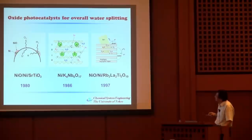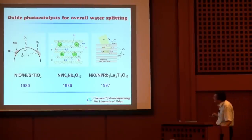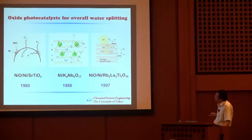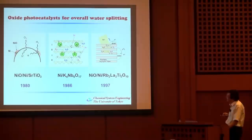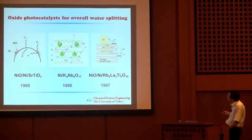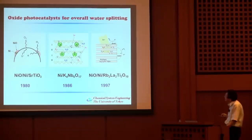Here I show three photocatalysts developed in our group. The oldest is strontium titanate powder modified by a nickel oxide-nickel core-shell structure, developed when I was a graduate student in 1980. This was one of the first examples evolving both hydrogen and oxygen on a particulate photocatalyst, though the quantum efficiency was very low, less than one percent. We subsequently developed layer-type photocatalysts where intercalated water molecules decompose into hydrogen and oxygen with better quantum efficiency.